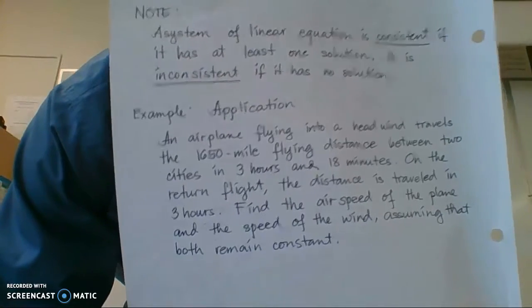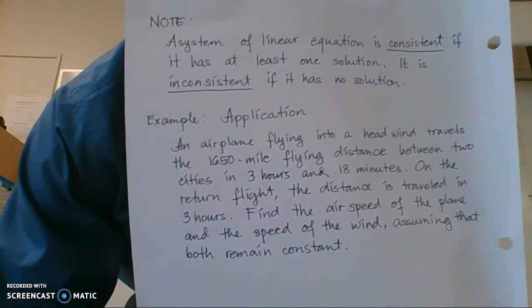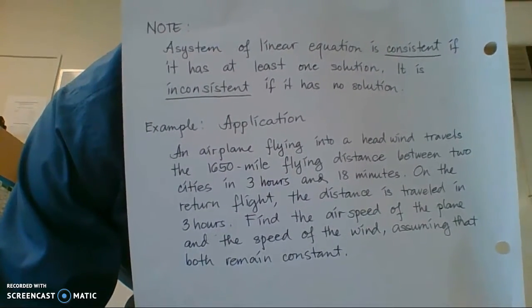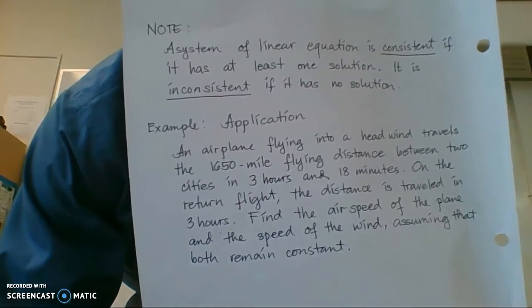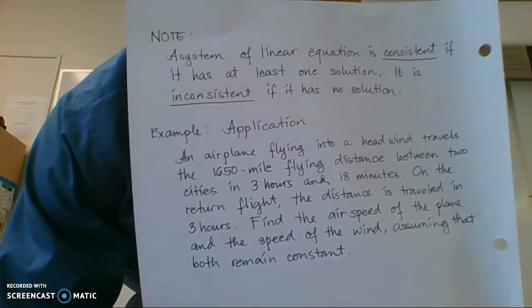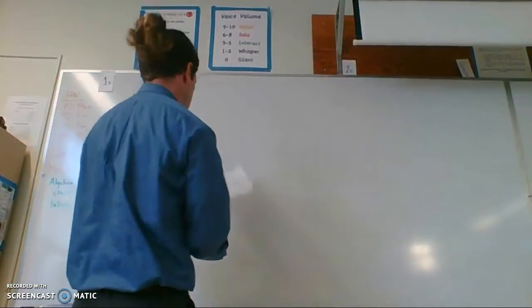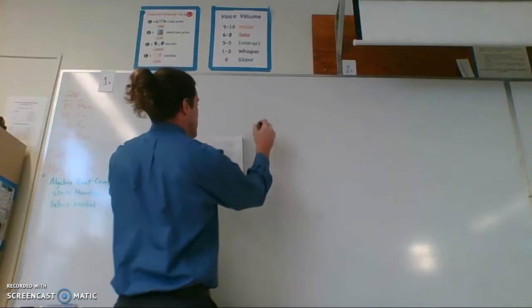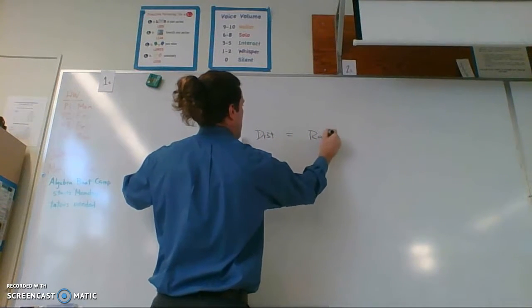Okay, so basically what you have is the plane flies 1,650 miles both times, but the amount of time it takes is different each time. So I tried to hint to some of you guys that the main equation we want to use is distance equals rate times time.